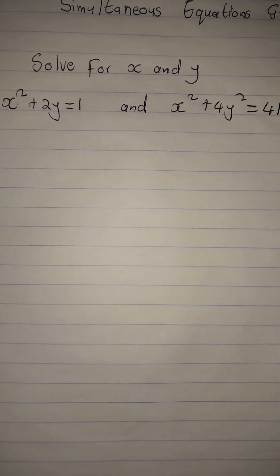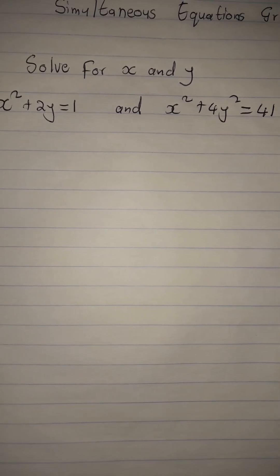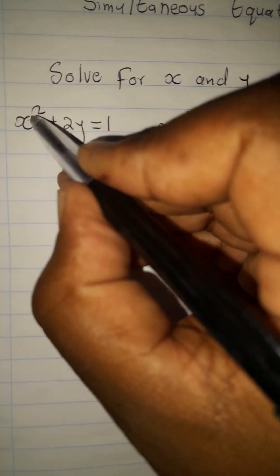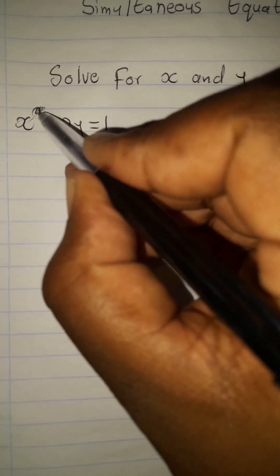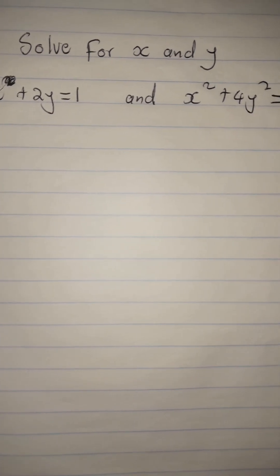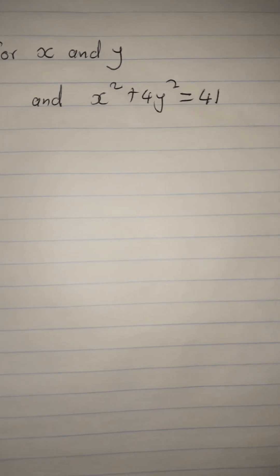So without wasting time, let's put this into practice. It was supposed to be x because one equation should be linear and the other should be quadratic. So it's x plus 2y equals 1, and x squared plus 4y squared equals 41.